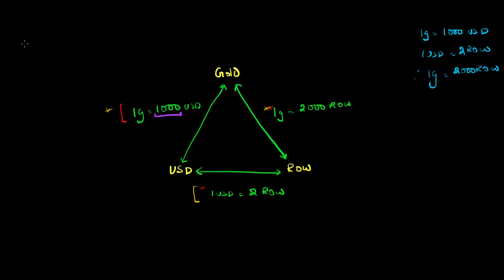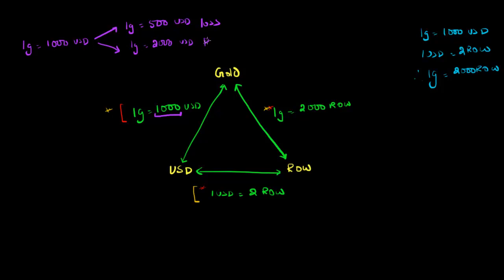To be more explicit: when you buy gold, if the exchange rate is one unit of gold equals 1,000 U.S. dollars, and after you buy gold that exchange rate changes to one unit of gold equals 500 U.S. dollars, you will have incurred a loss. On the other hand, if the exchange rate changes such that one unit of gold equals 2,000 U.S. dollars, you will see a profit. So it's really key to understand that when you buy gold, you are buying exposure to this exchange rate.